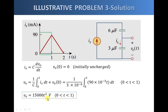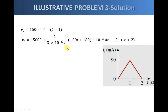We can also use this equation to get V_o at exactly t equals one second. Substituting t equals one second, we find that the voltage at exactly t equals one second is 15,000 volts.